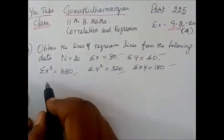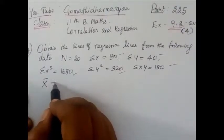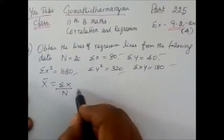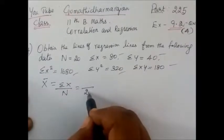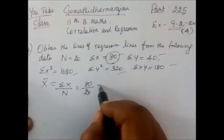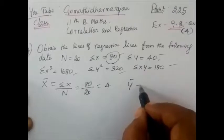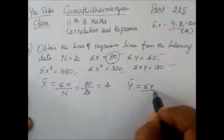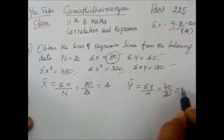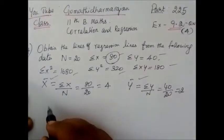We want to find x̄. x̄ equals σx divided by n. n value is 20, σx equals 80, so x̄ equals 80 divided by 20 equals 4. Then ȳ equals σy divided by n, equals 40 divided by 20 equals 2. So ȳ equals 2 and x̄ equals 4.